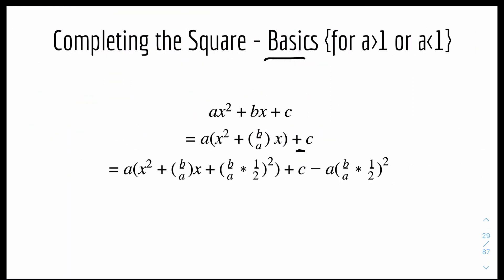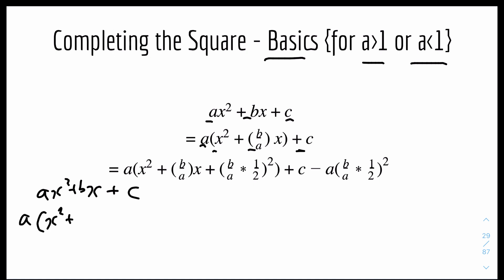Now we have the basics for when a is bigger than 1 or a is smaller than 1. We have coefficients a, b, and c. What you first do is factorise a out of the x² and x terms, and isolate the c and separate it. So from ax² + bx + c, you extract a, giving a(x² + (b/a)x) + c. Now you can notice that inside the bracket the coefficient of x² is 1, which means we can solve it using the rule from the last slide.